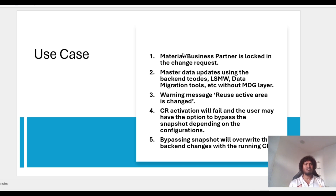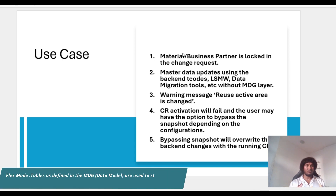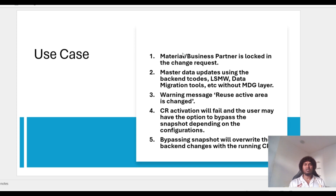In MDG 2023 FPS1, SAP introduced a new feature with which you can synchronize backend changes in the running CR. This feature was introduced as part of the recent Customer Connection program. If you are not running MDG 2023, you need to install the relevant SNOTEs. You need to first configure the BGFC and then activate the Business Transaction Event. This feature is available for Business Partner and Material Master, but not for the financial model or custom data.